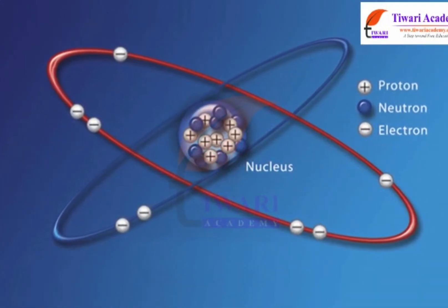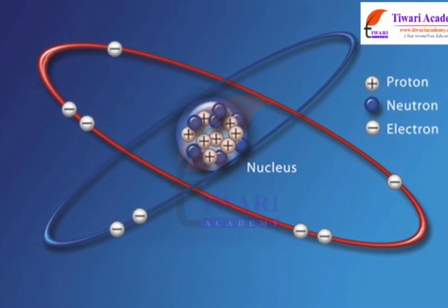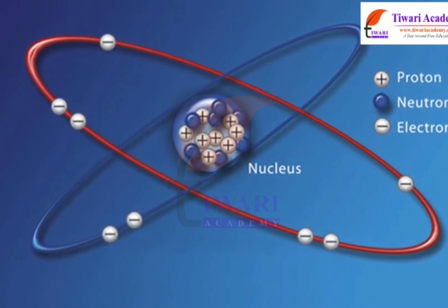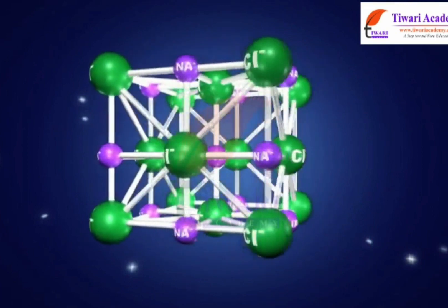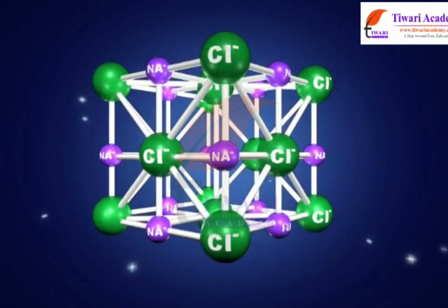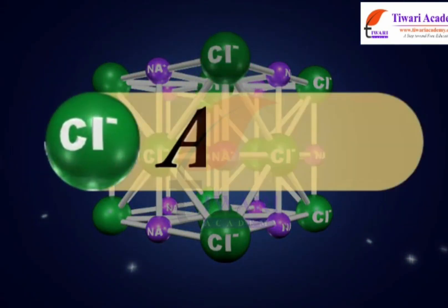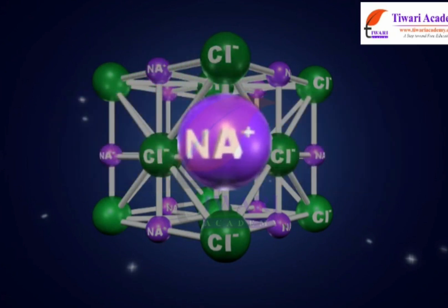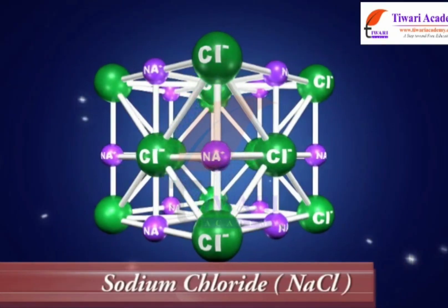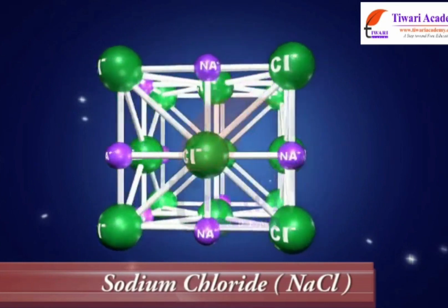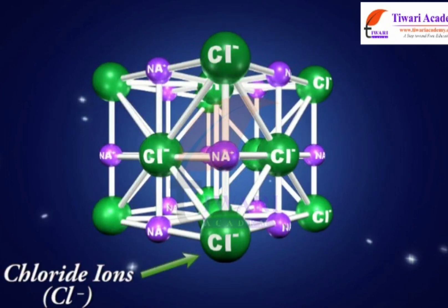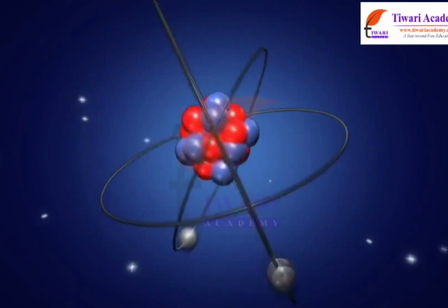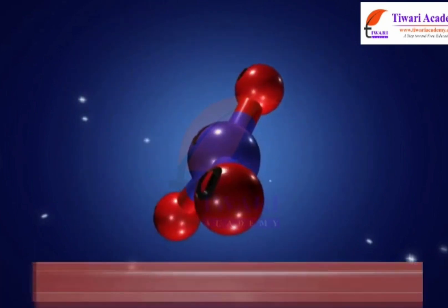An ion is a charged particle that can be negatively or positively charged. A negatively charged ion is called an anion and the positively charged ion a cation. For example, sodium chloride (NaCl): its constituent particles are positively charged sodium ions (Na⁺) and negatively charged chloride ions (Cl⁻). A group of atoms carrying a charge is known as a polyatomic ion — for example, the nitrate ion.